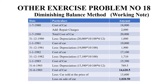This 19,000 rupees is the cost of the car as on 1-1-1981. We calculate the depreciation on that value, which is 1,900 rupees, and the balance we get is 17,100 rupees, which is the cost of the car as on 1-1-1982. For the year 1982, we calculate depreciation for one full year: 17,100 × 10/100, which equals 1,710 rupees.